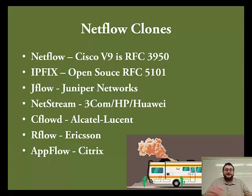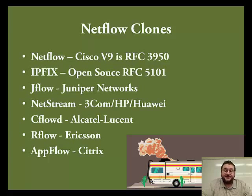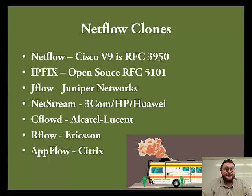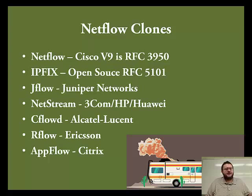There are a number of NetFlow clones. Cisco is the official source of NetFlow and has defined version 9 in RFC 3950. IPfix is an open source version of NetFlow, sometimes listed as version 10, defined in RFC 5101. JFlow was developed by Juniper Networks, but if you look at the packet format closely, JFlow is really just NetFlow version 5. NetStream was developed by 3Com, HP, and Huawei. CFlowD is used by Alcatel and Lucent, RFlow by Ericsson, and AppFlow by Citrix, among others.